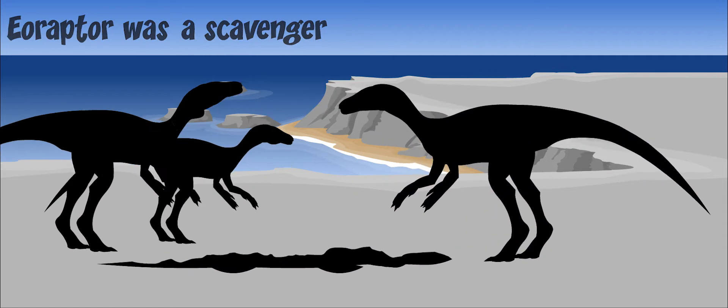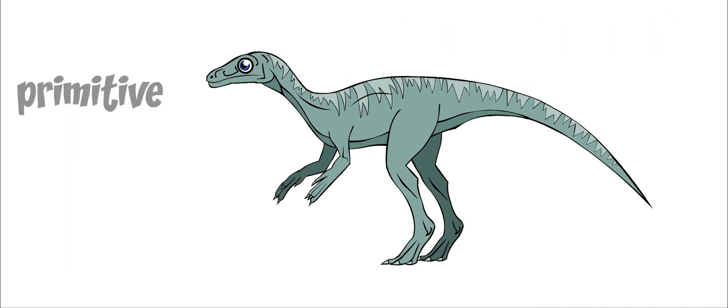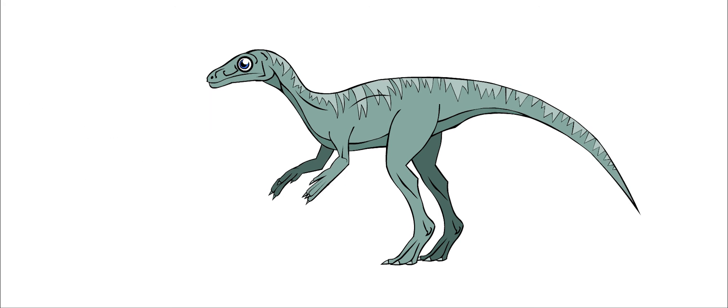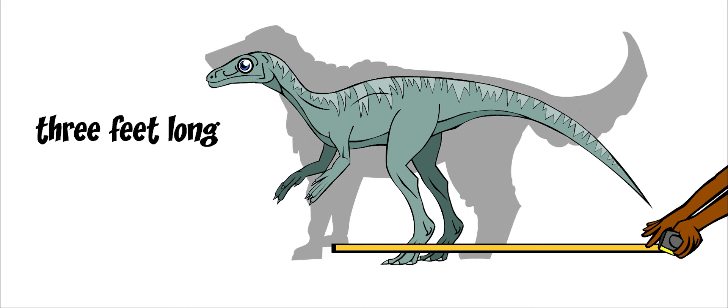The name Eoraptor means dawn thief. This dinosaur could be one of the most primitive ever, meaning that it was very simple. It was small, about three feet long, which is about the size of a small dog.